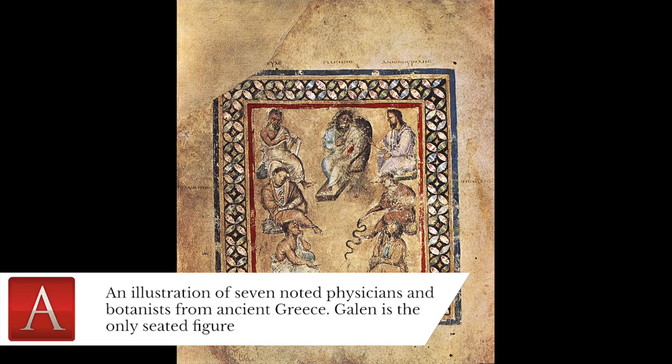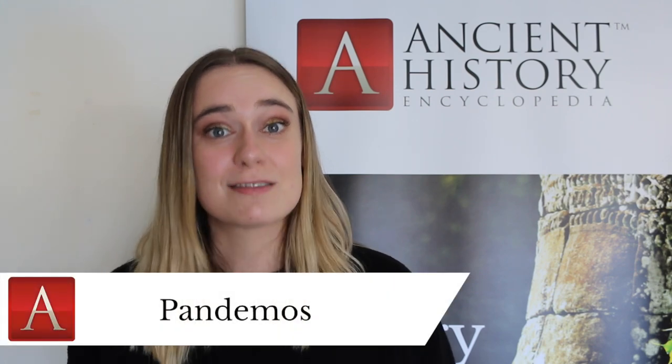The word plague, referring to a lethal epidemic, was coined by the physician Galen, who lived through the Antonine Plague of 165 to 190 CE. When we're referring to a plague, we mean a contagious bacterial disease. The word pandemic comes from the Greek word pandemos, which can be broken down to pan meaning all and demos meaning people, and refers to a plague which is prevalent over an entire country or the world.